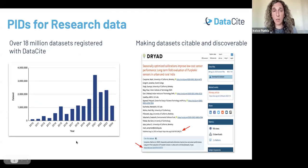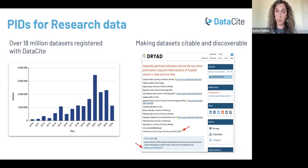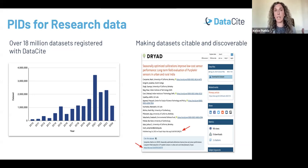In terms of the work we do for research data, we have within the Datasite records 18 million datasets registered with DOIs. This is important in the context of making datasets citable and discoverable — it provides researchers a way of getting a citation for their datasets and making them more discoverable through the tools and platforms that index data as part of the content they include.